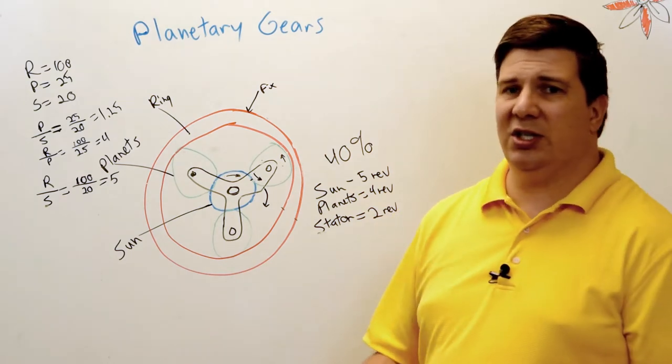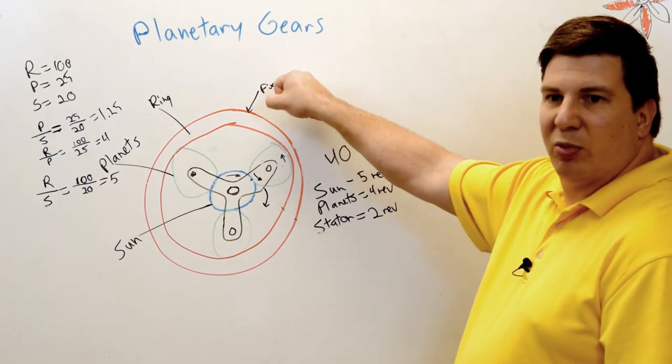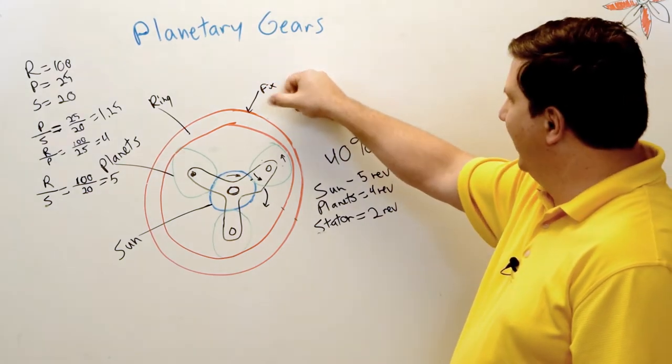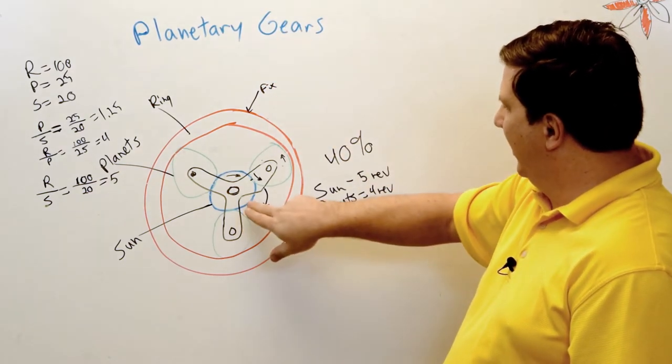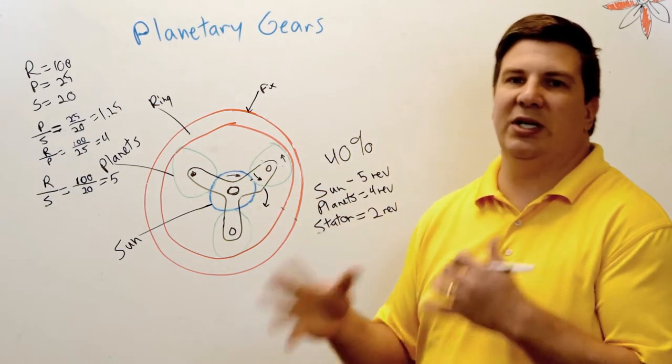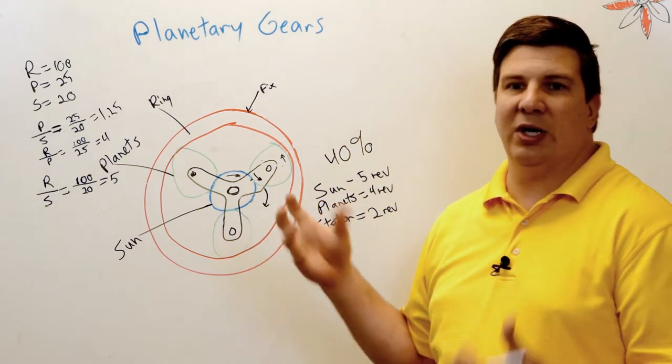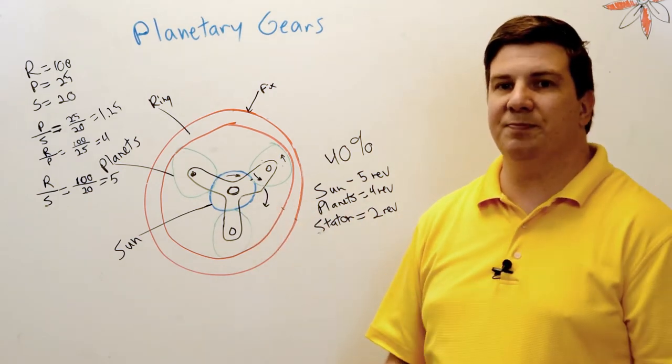So big applications with this, as I said, in cars. A car will have a brake holding this and then it'll release and then grab the sun or grab the stator or whatever else. But you can get so many different speed combinations, and that's basically what is going on in your automatic transmission.